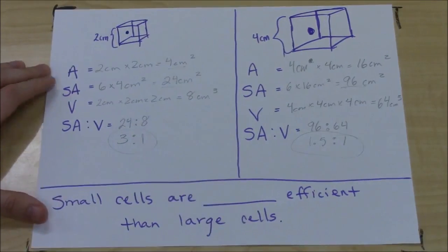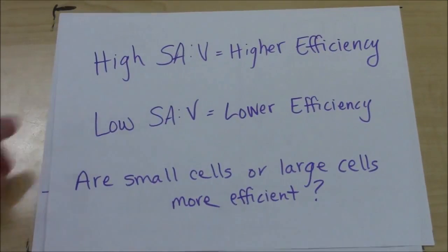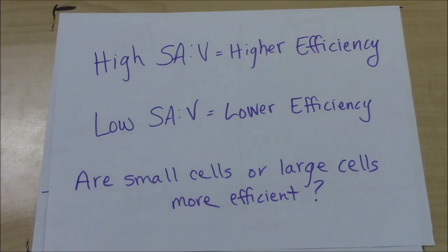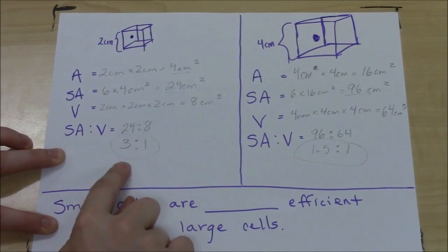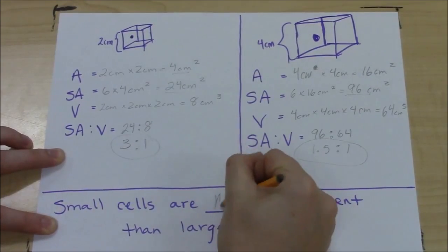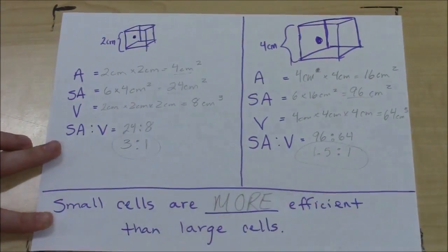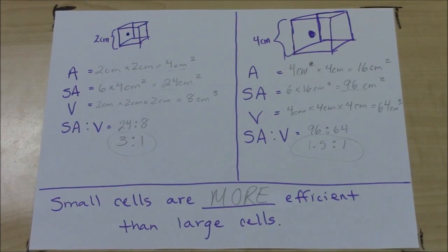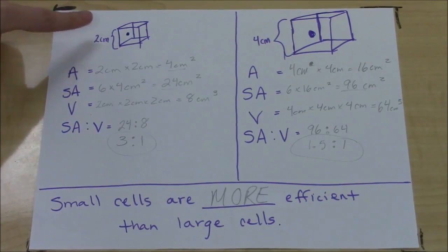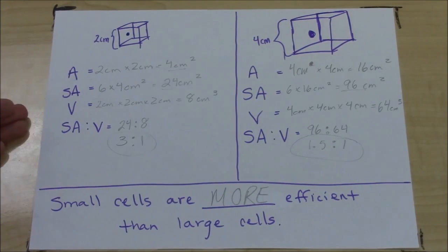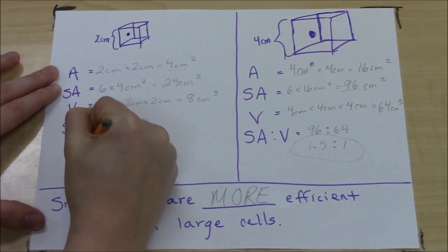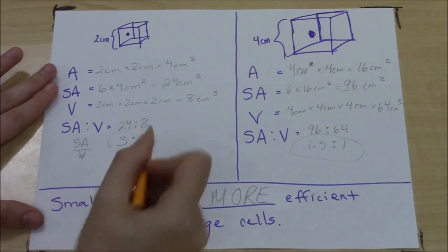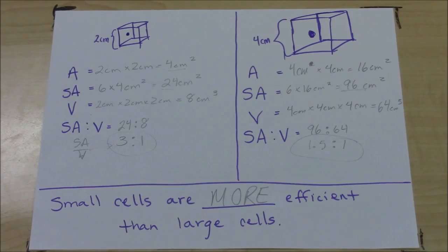Let's look at the big picture. Recalling that a higher surface area to volume ratio means higher efficiency and a lower surface area to volume ratio equals lower efficiency, the smaller cell has a higher value — so small cells are more efficient than large cells. I'd encourage you to practice with cubes of different side lengths, determining the values and reducing by dividing the surface area by the volume.